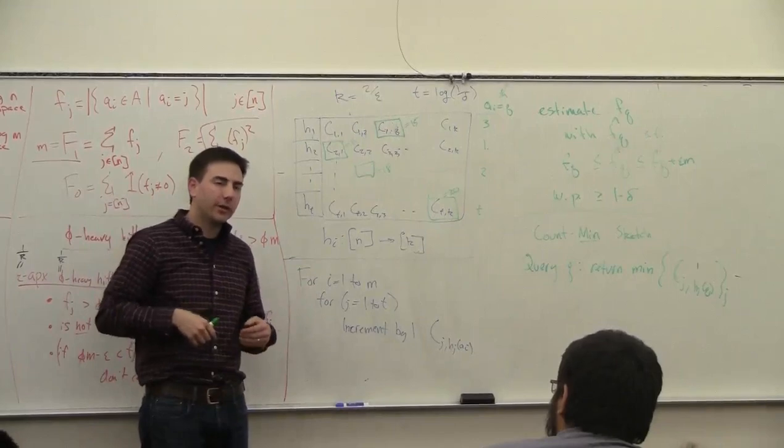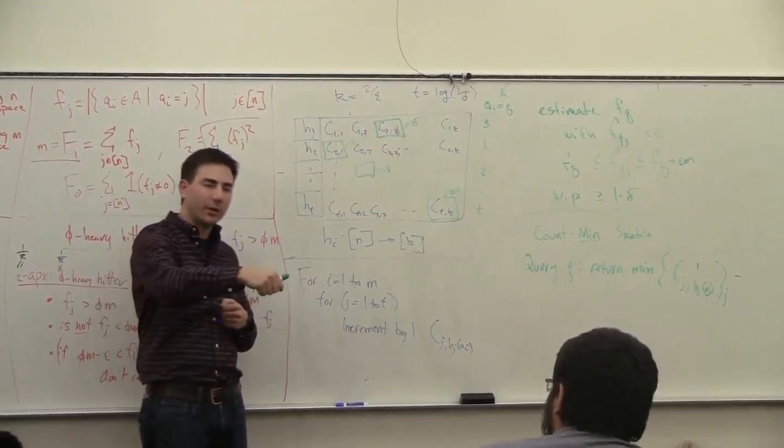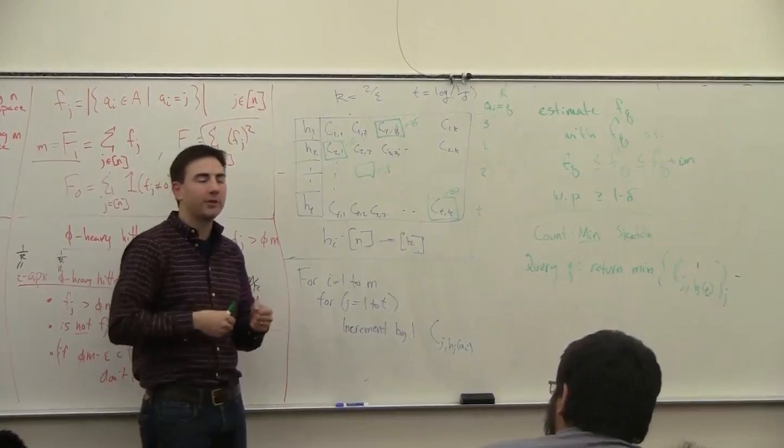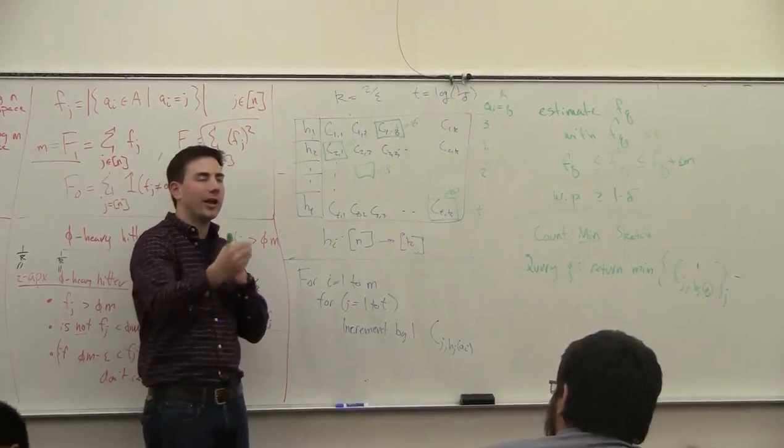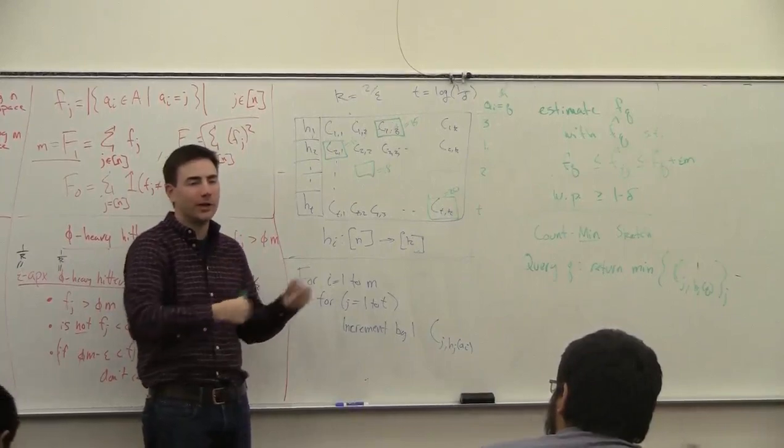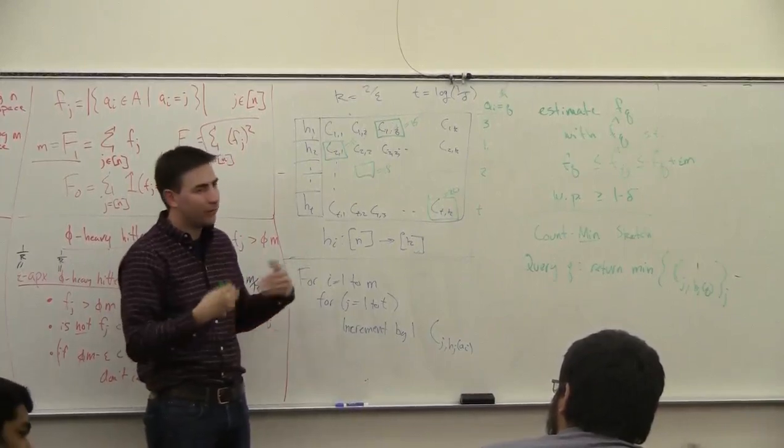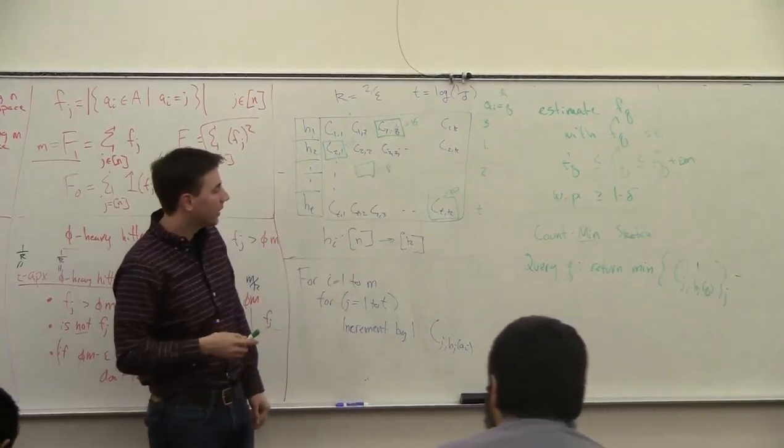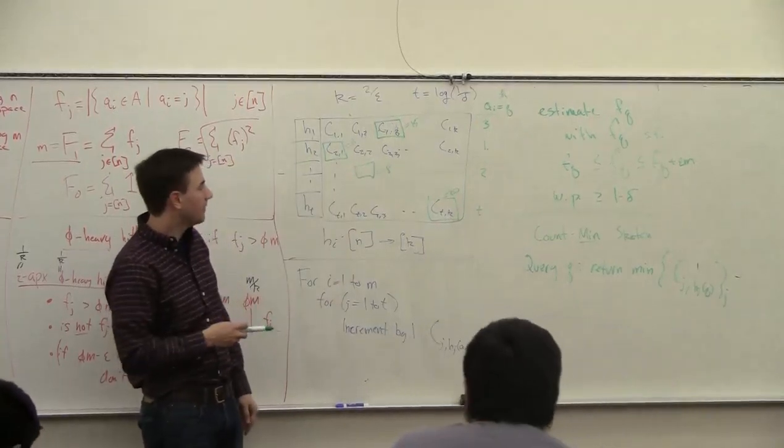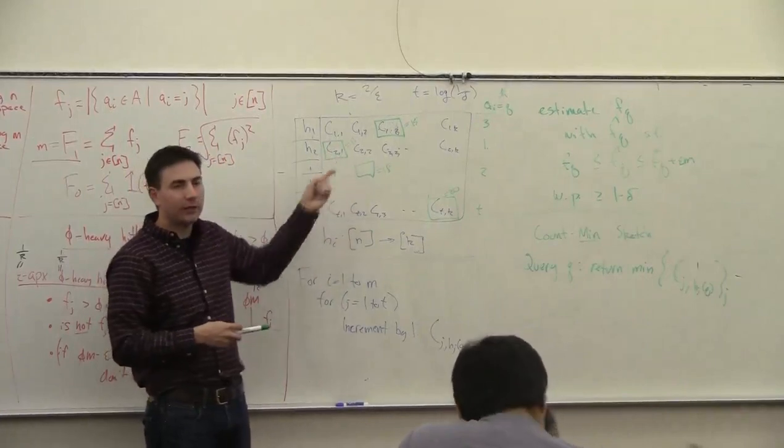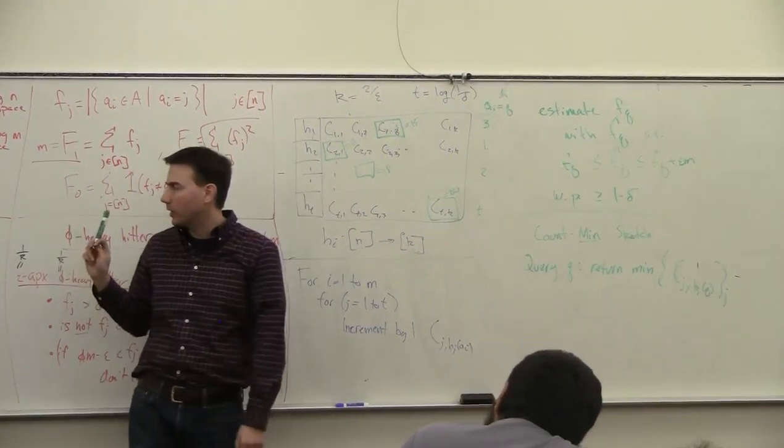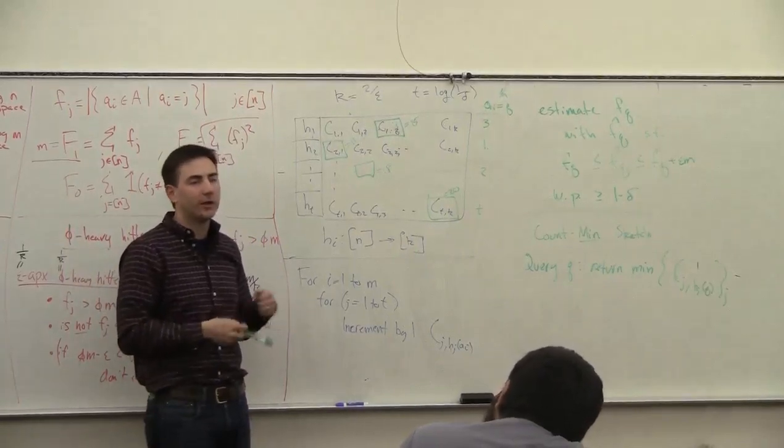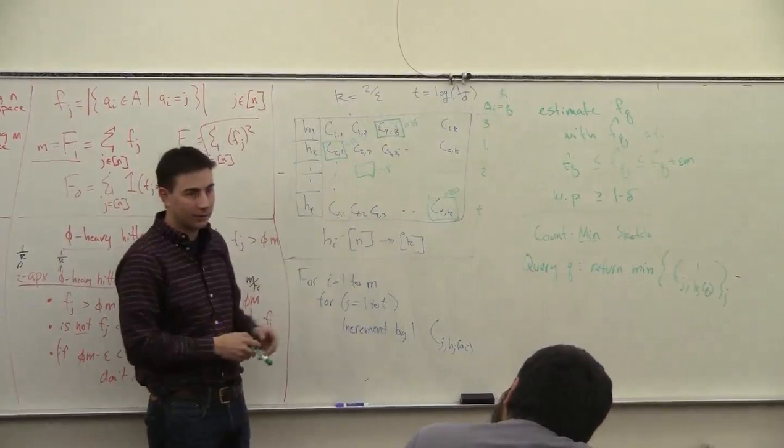You can increase something by one or decrease it, but you can't decrease it more than you ever increased it, because you can't get someone to walk out of a football stadium if they never walked in. So if you have that guarantee, then you can keep track of the counts with the same guarantees, even if you have decreases. Whereas the Misra-Gries summary could not handle decreases, this can handle decreases.